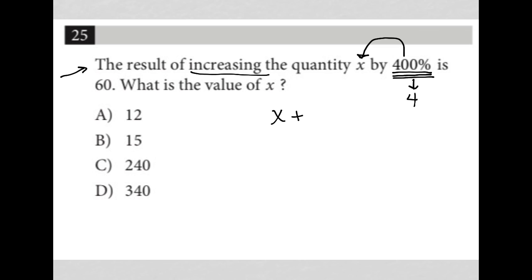So again, 400% of x, 400% of x is the same as 4x. So we're adding 4x to our x, right? This represents 400% of x.